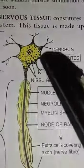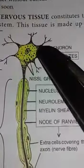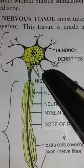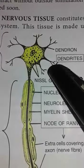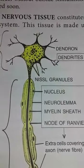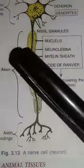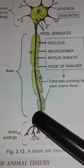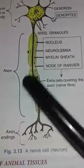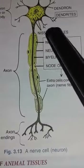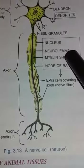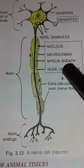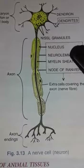The cyton contains short extensions called dendrons, which are further branched into dendrites. The long extended part on the downward side from the cyton is called the axon. The axon contains a protective sheath called the neurolemma, and a myelin sheath which acts as an insulating sheath against the dissipation of energy.